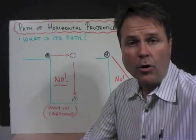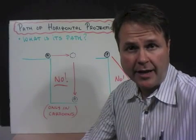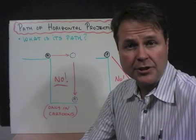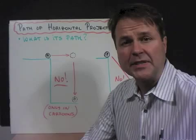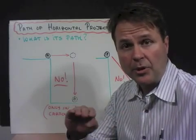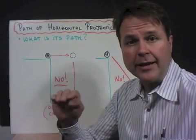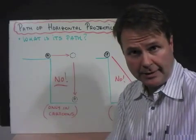So what is the path of a horizontally launched projectile? An example would be something like rolling a ball off of a table. When I roll the ball, it is launched through the air, and gravity then begins to pull it down.